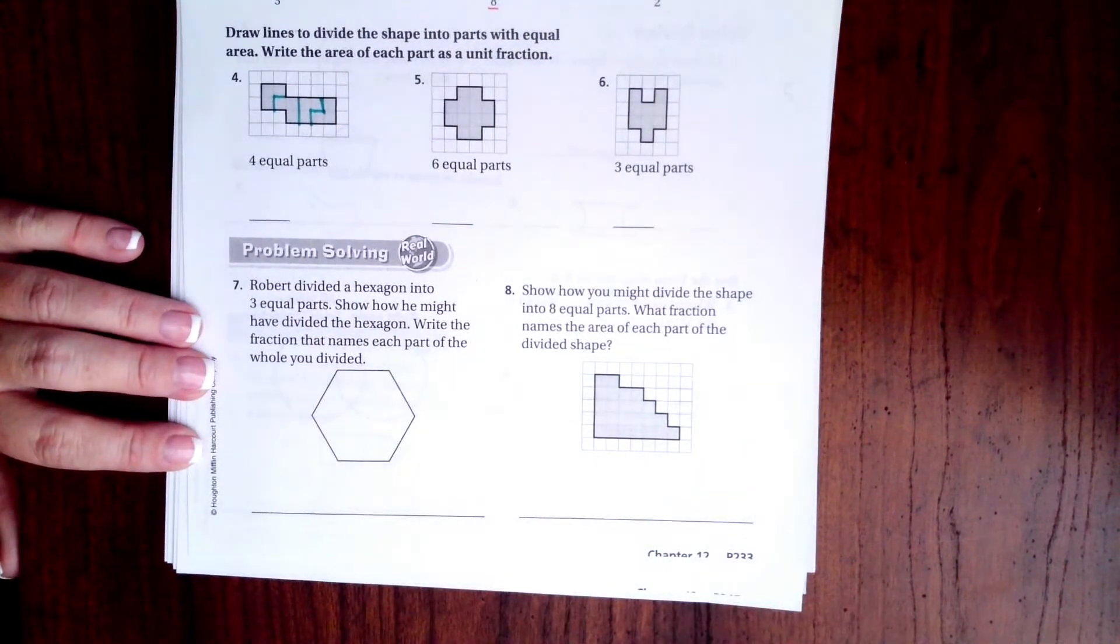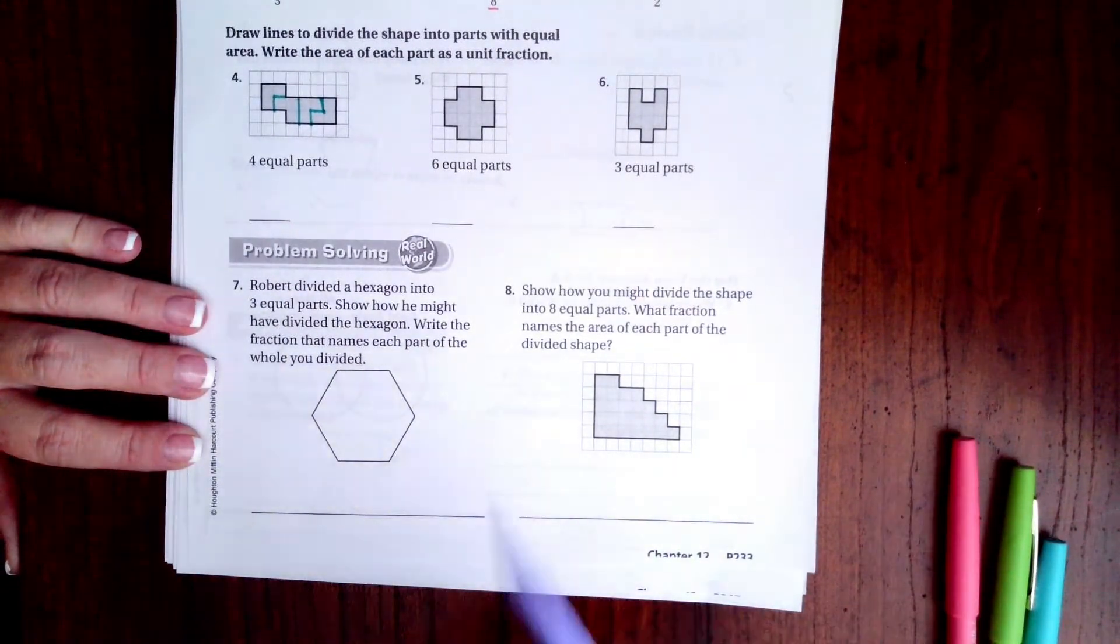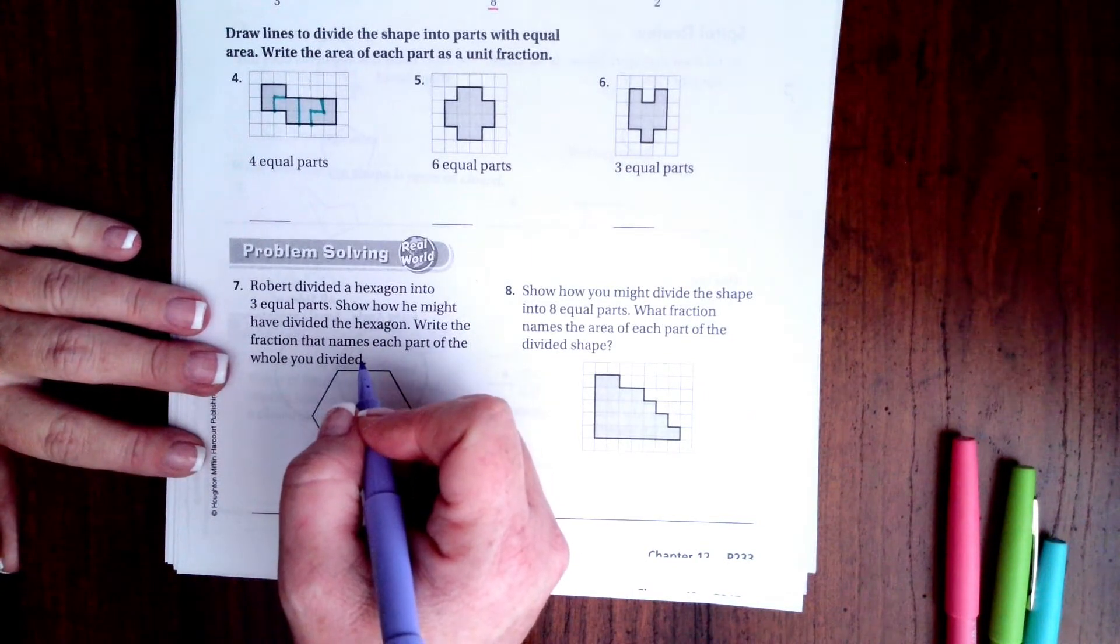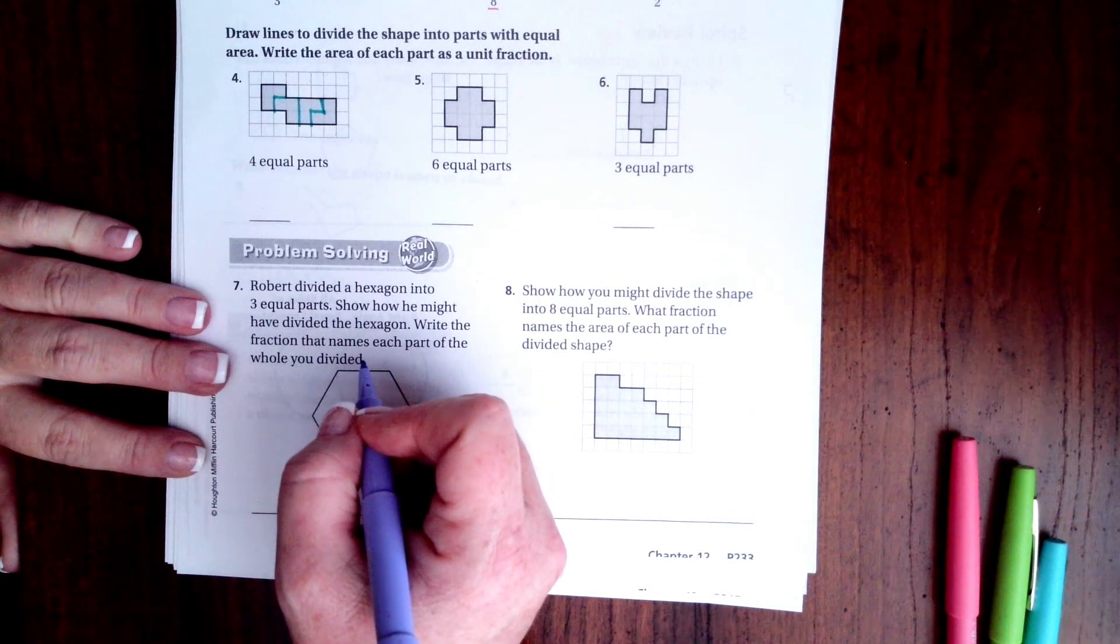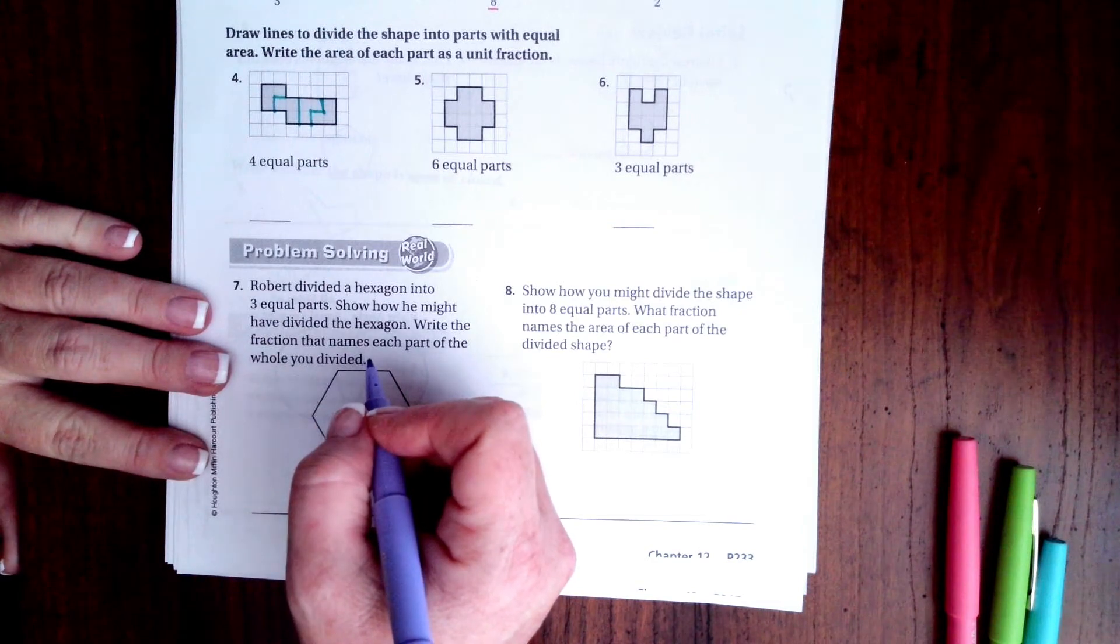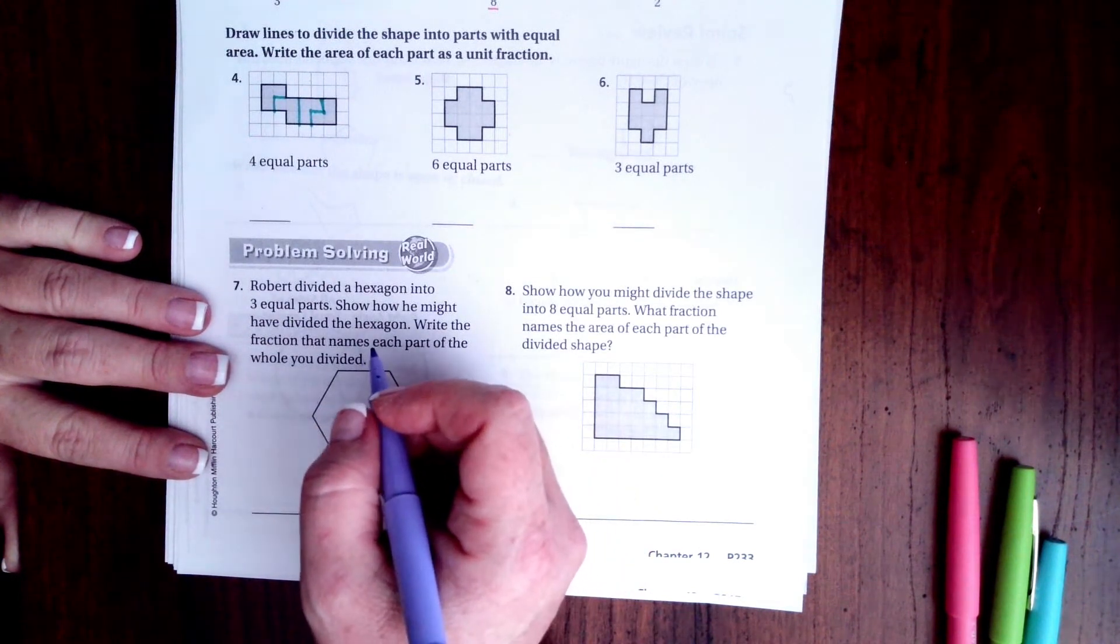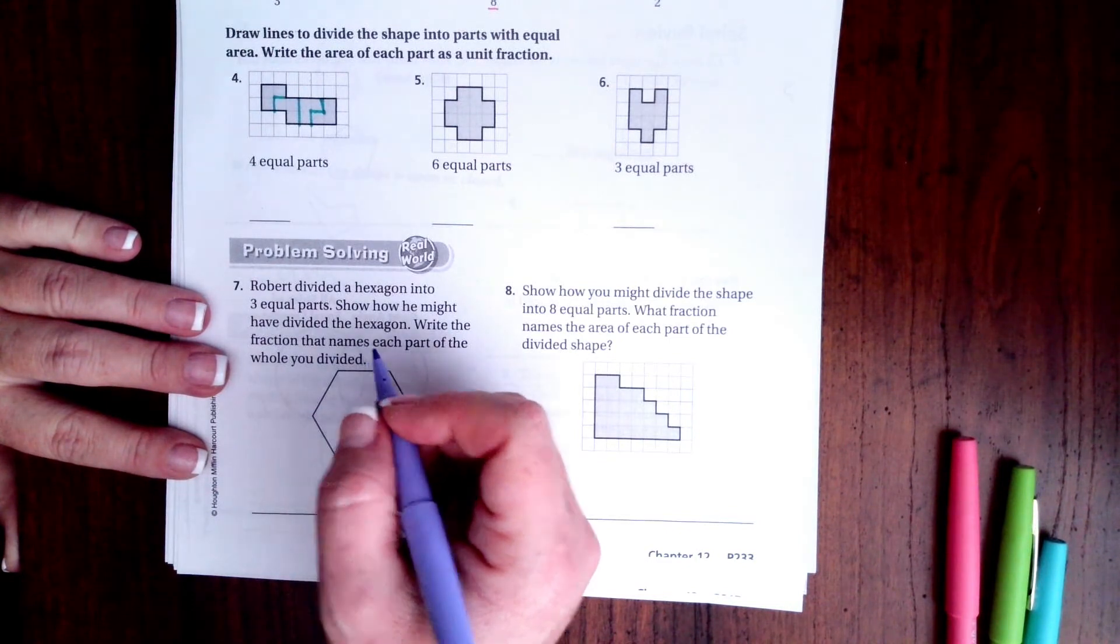Okay, all right. Robert divided a hexagon into three equal parts. Show how he might have divided the hexagon. Write the fraction that names each part of the whole you divided. So we want our hexagon into three equal pieces.